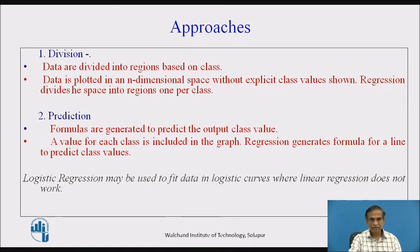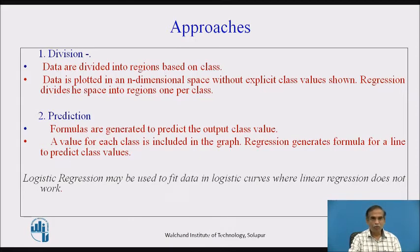There are different approaches for regression. The first is the division approach, where the data is divided into regions based on the class. Data is plotted in n-dimensional space and regression divides the space into regions, one per class. The second approach is prediction, where we find a formula and generate it to predict the output class value. A value for each class is included in the graph, and regression generates a formula for a line to predict the class values.